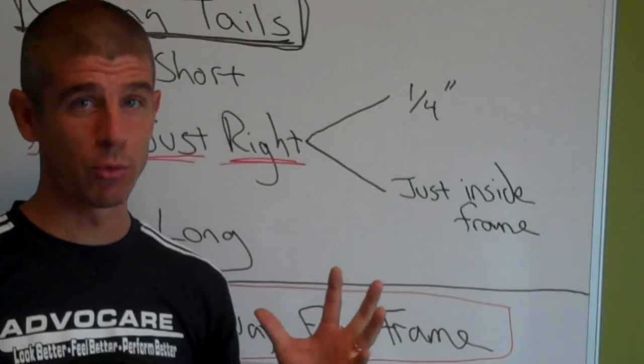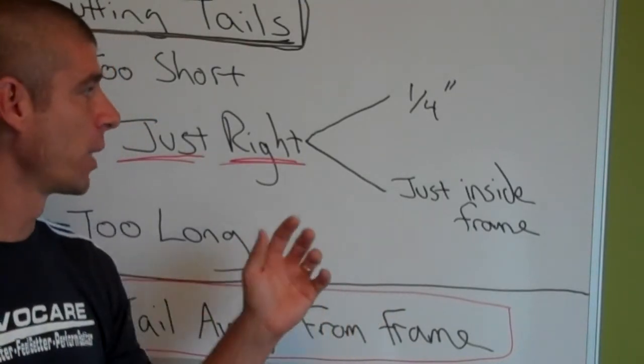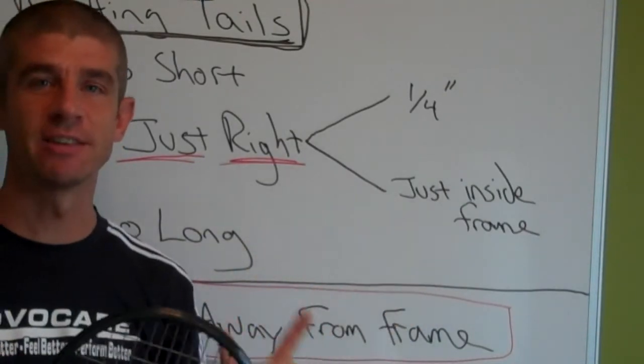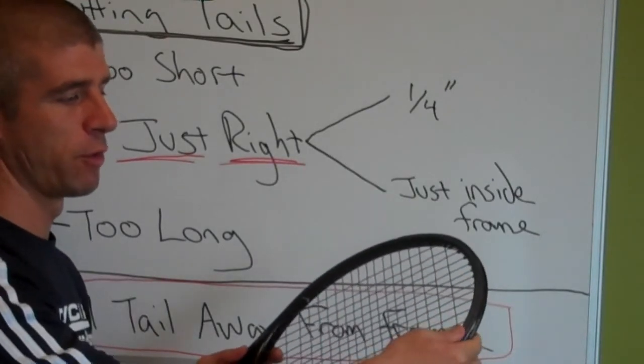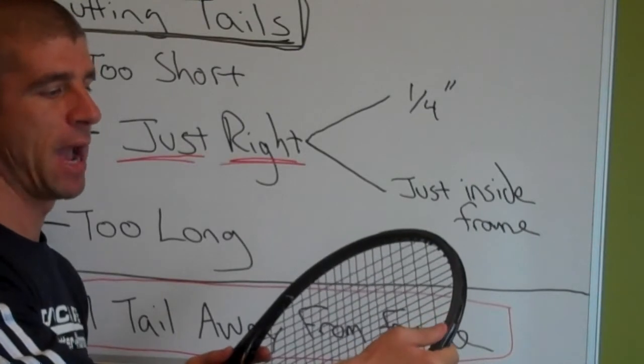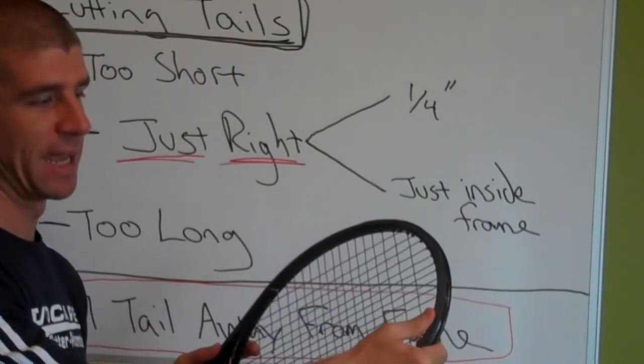And that's just a real general rule because frames are different widths. But really a better rule is actually what I have listed here. It says just inside the frame. So basically if you run your finger or your thumb around the edge of the frame right on the outside, you shouldn't be able to feel the tail sticking out.